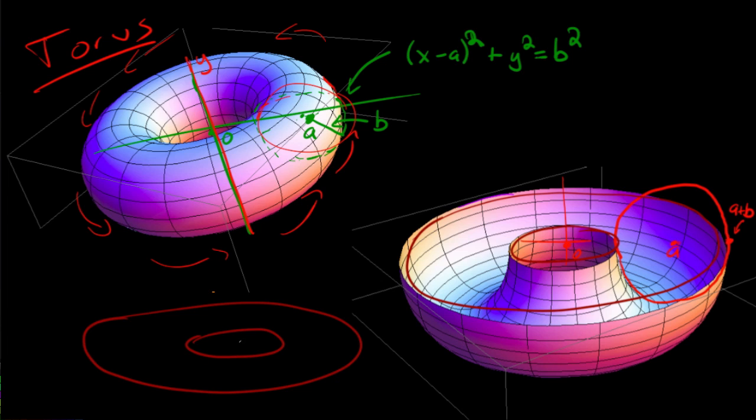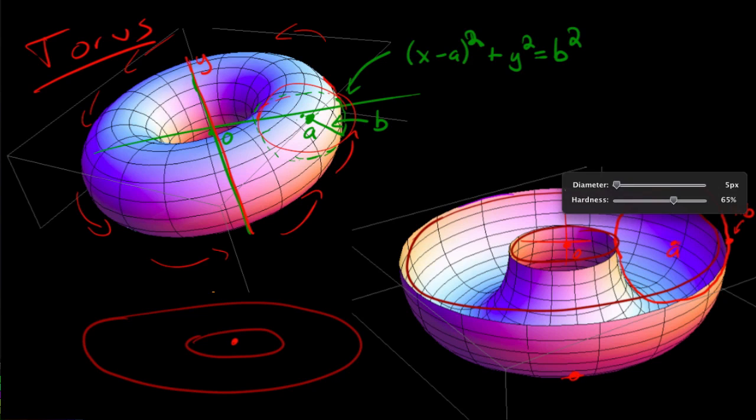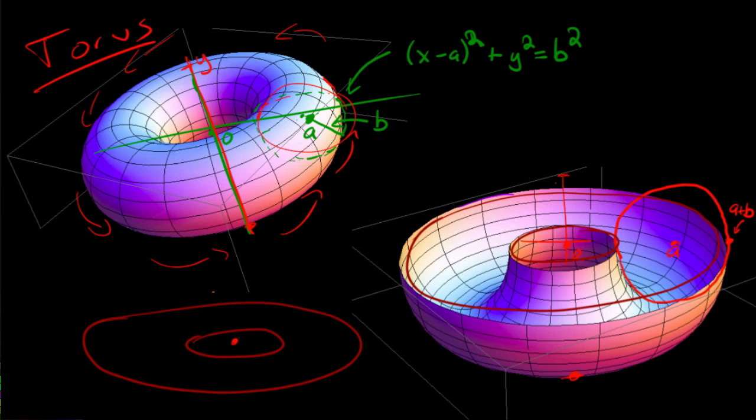Basically we're going to take the area of this washer and then we're going to integrate from the bottom over here to the top. So from the bottom here to the top of the torus. So then our task is to find the area of the cross section, which is what I drew right here.